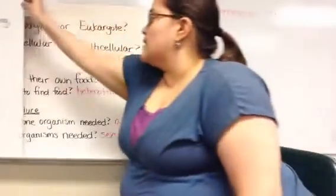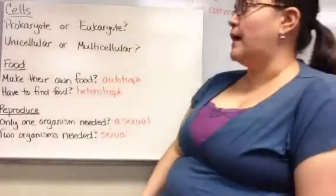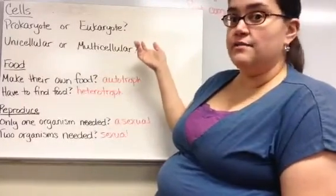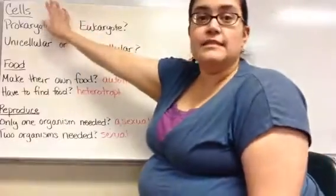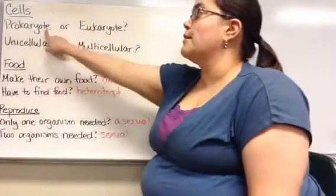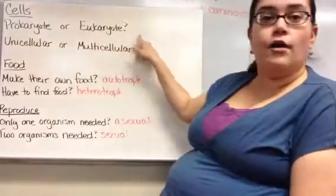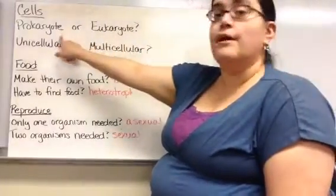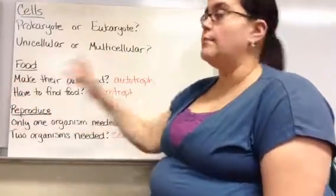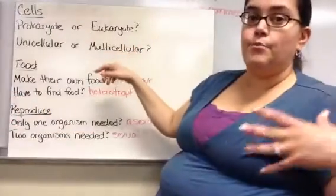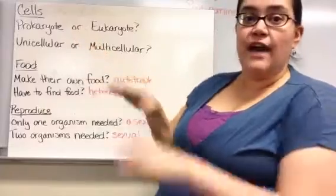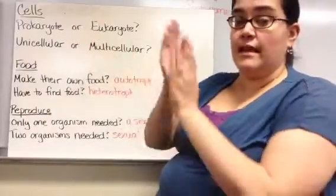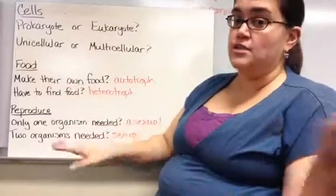The first two questions are a review of cells. We look at whether an organism is a prokaryote — meaning it does not have a nucleus — or a eukaryote, meaning it does have a nucleus. Prokaryotes go in one group and eukaryotes in another. This is a quick and cut-and-dry division: it either has a nucleus or it doesn't.